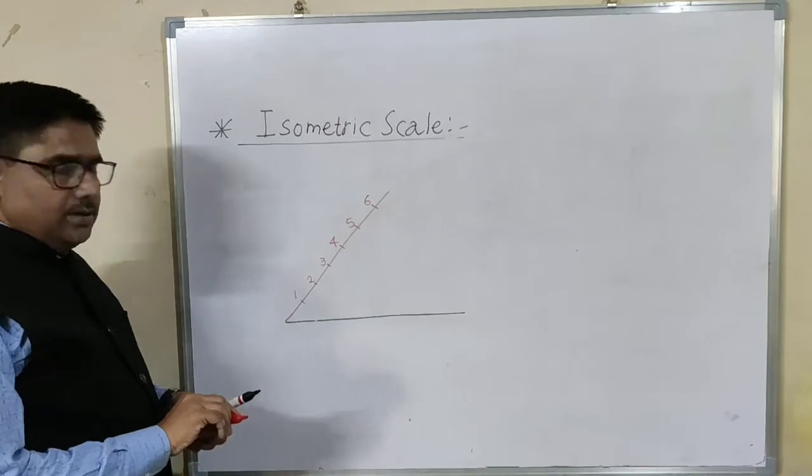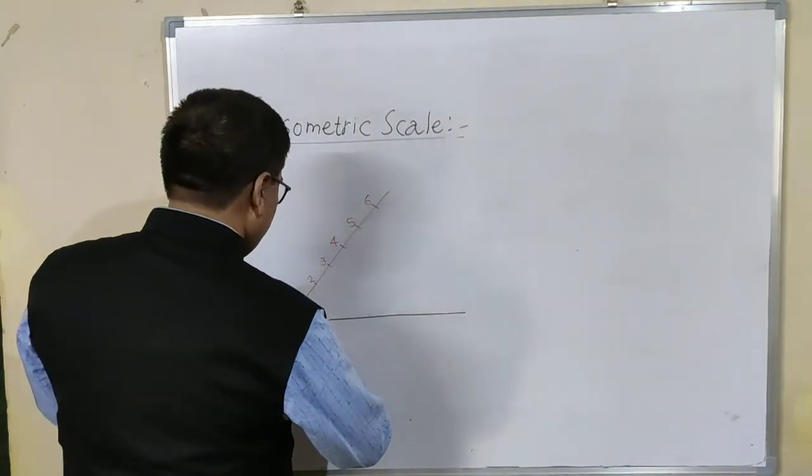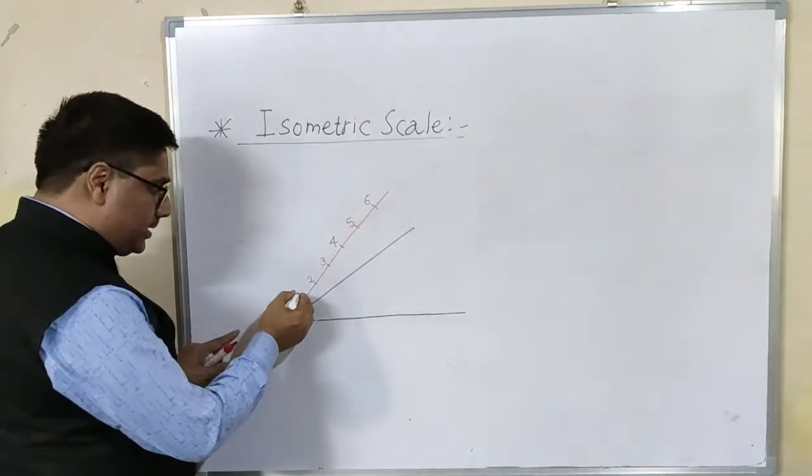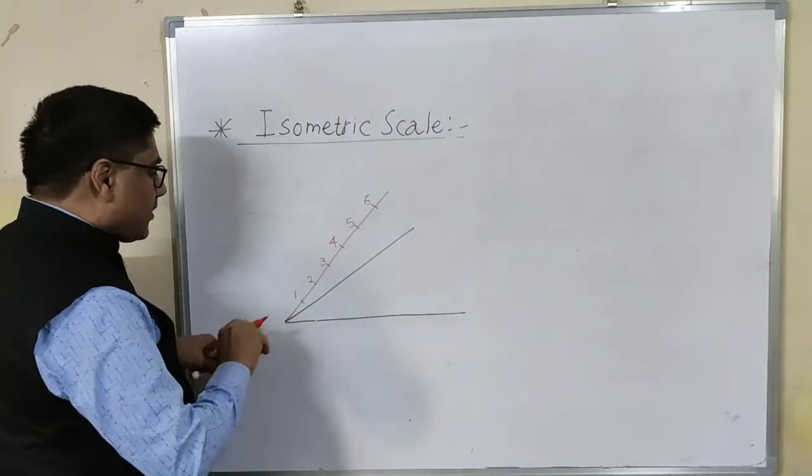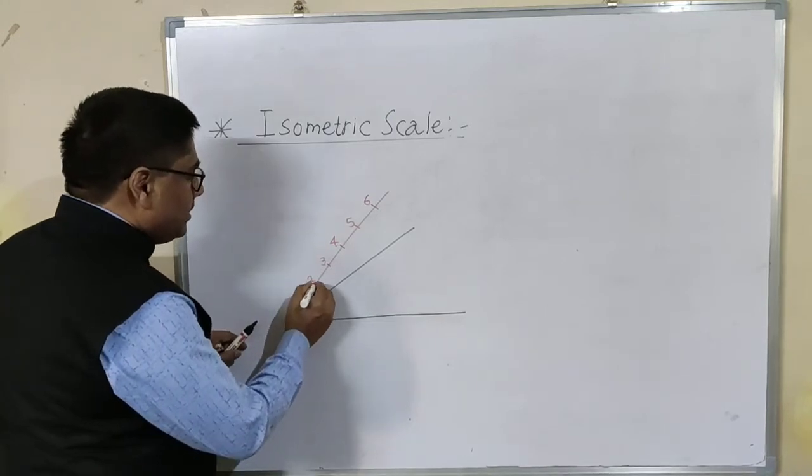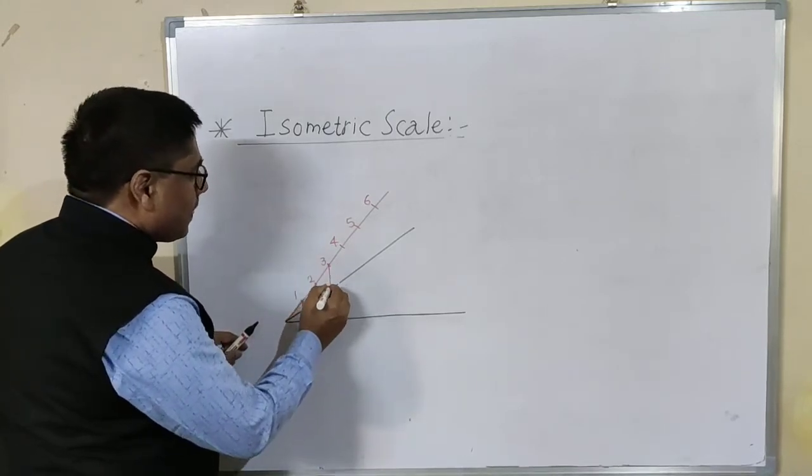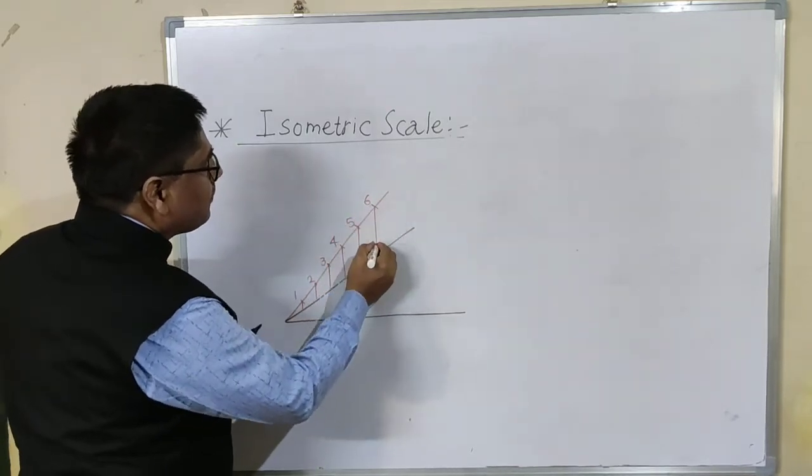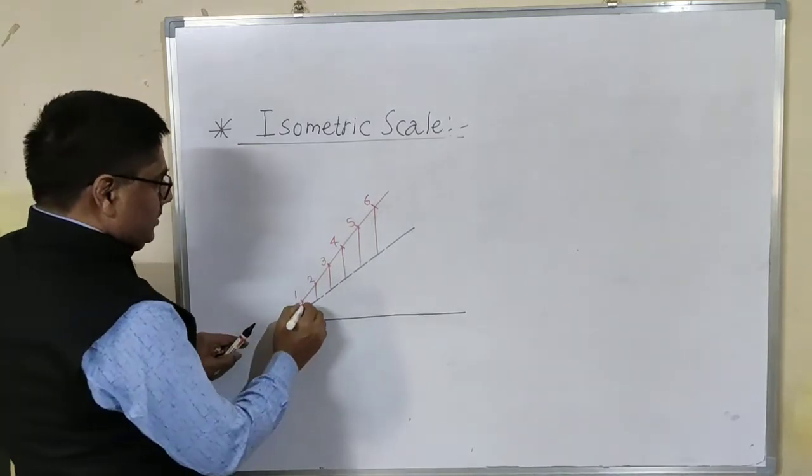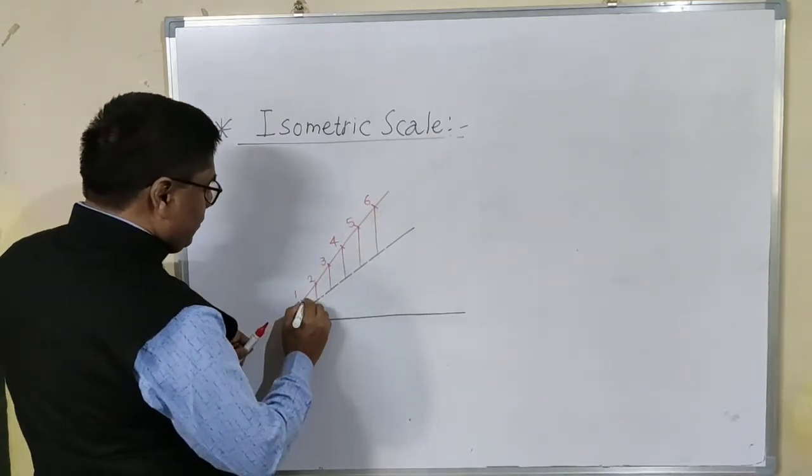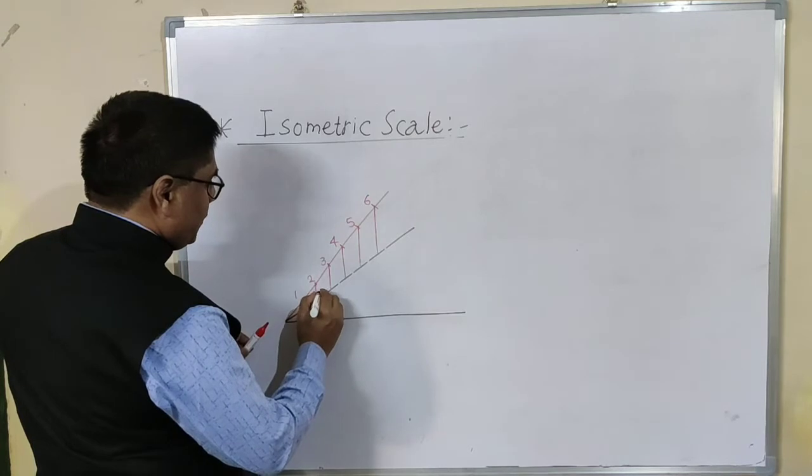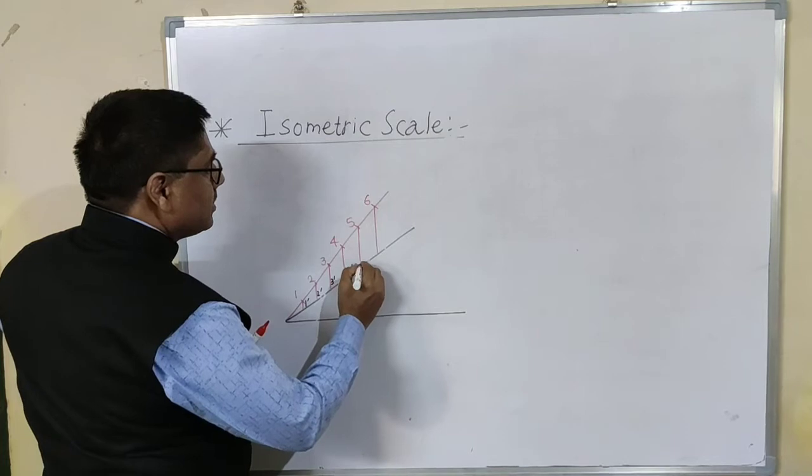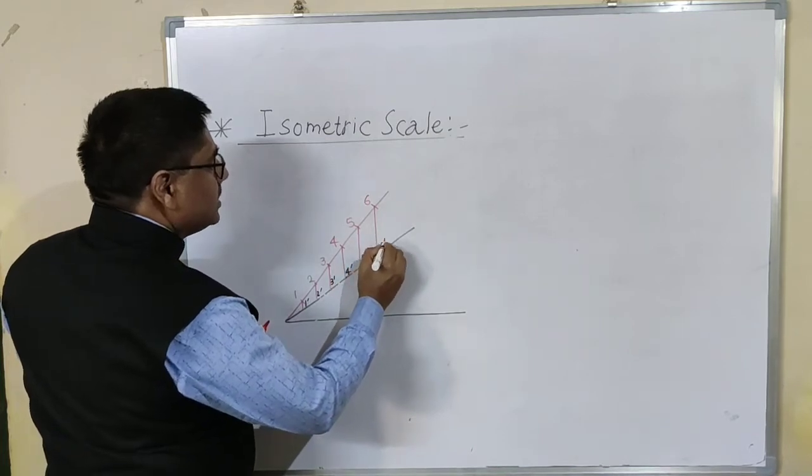After this, draw another line at 30 degree angle, then project each and every point on 30 degree angle. Let us call these points as 1 dash, 2 dash, 3 dash, 4 dash, 5 dash, 6 dash.